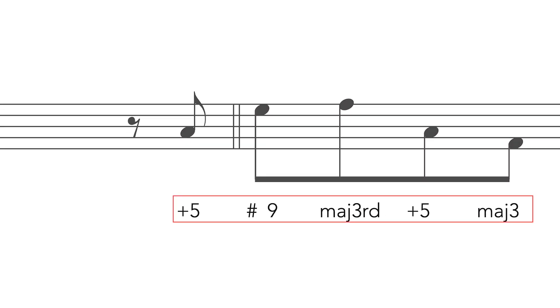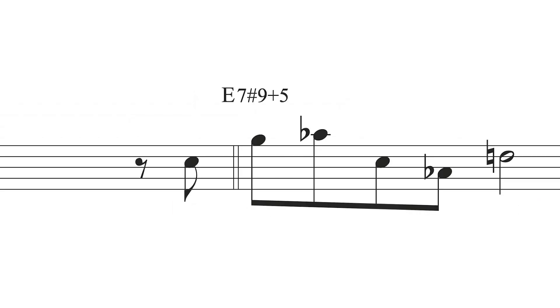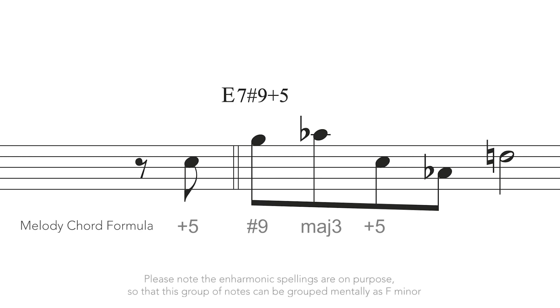So this is the formula to apply over the E7 chord: augmented 5th, sharp 9, major 3rd, augmented 5th, major 3rd, flattened 7th. This may sound mathematical, and perhaps it is, but after a while you'll get used to the sound and it will become natural.